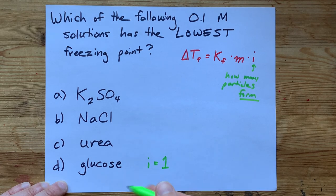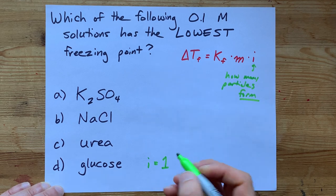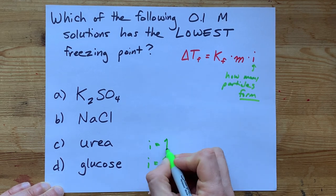It's only one particle when it dissolves in water. However, urea is also a molecular compound. It also has a Van't Hoff factor of 1.